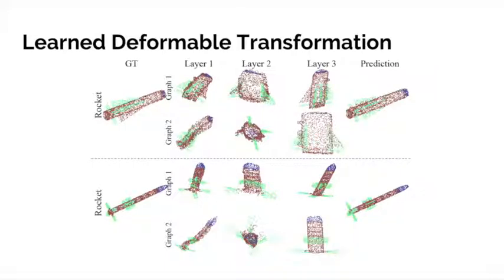For a rocket, corresponding graphs in red exaggerate the wings of the rocket for easier learning. Graphs in orange exaggerate the body of the rocket.